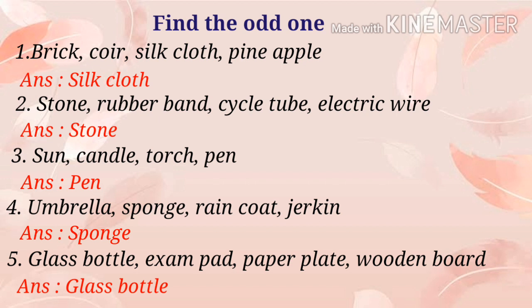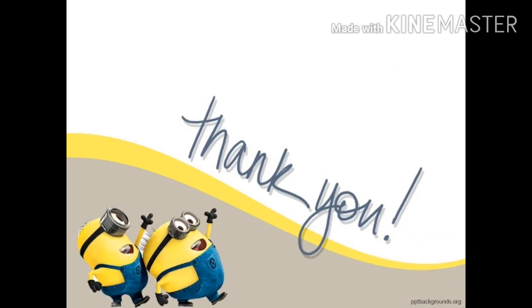Final recap — find the odd one: brick, coir, silk cloth, pineapple — answer silk cloth. Stone, rubber band, cycle tube, electric wire — answer stone. Sun, candle, torch, pen — answer pen. Umbrella, sponge, raincoat, jerkin — answer sponge. Glass bottle, exam pad, paper plate, wooden board — answer glass bottle.